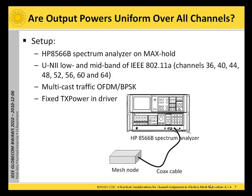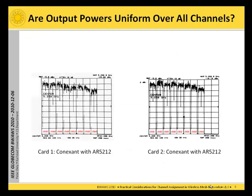The first question we ask is: are the output powers uniform over all channels? To answer that question, we conducted the following measurement. We connected a mesh node using a coaxial cable to an HP 8566 spectrum analyzer. On the mesh node, we generated multicast traffic in OFDM-BPSK mode and measured the output power on the spectrum analyzer using the max hold mode. On the mesh node, we fixed the transmission power for all experiments. In the picture here, you can see the result.